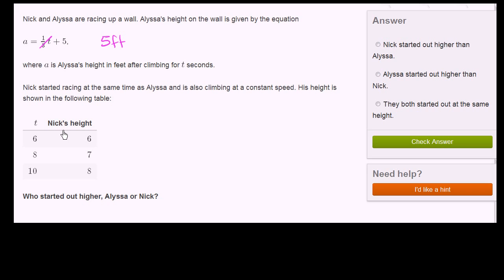Now let's think about Nick's height at time equals 0. There's a couple of ways that we can go about doing this. One is just to back up, to kind of go backwards on this chart. Let me show you what I'm talking about. If this is time and this is N for Nick's height, because we have A for Alyssa's height, let me make a little table here.